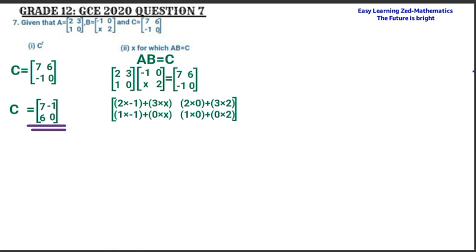Once I've done that, I close the brackets and set this equal to matrix C. Now I simplify: 2 times negative 1 gives negative 2, plus 3X. Then 2 times 0 is 0, plus 3 times 2 gives 6. Coming down: 1 times negative 1 gives negative 1, and 0 times X gives 0. Then 1 times 0 gives 0, plus 0 times 2 gives 0.